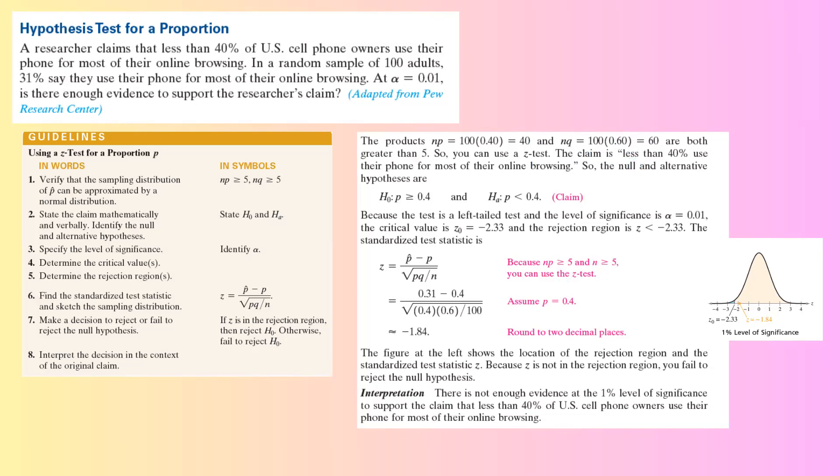Now, let us identify the null and alternative hypothesis. Note that the keyword given to you is 'claim that less than.' Since you have less than, it means that it is your alternative hypothesis. Alternative hypothesis says I'm guessing that the population proportion is less than 40%. This is your claim, and this is your alternative hypothesis.